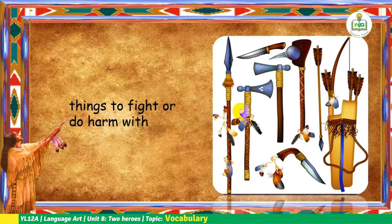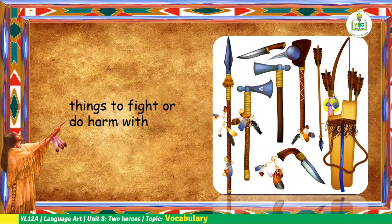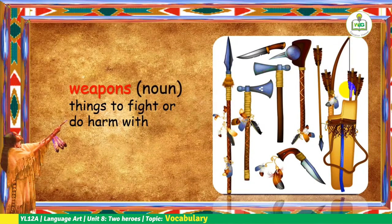Things to fight or do harm with. So if you still remember, these are the arrows and this is a bow. A bow and arrows are what you call weapons. Including spear, axes, knives — so again, these are what you call weapons.